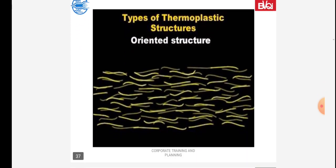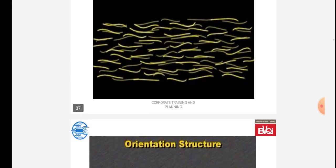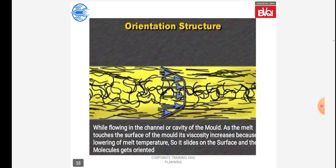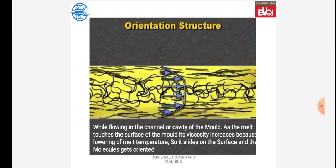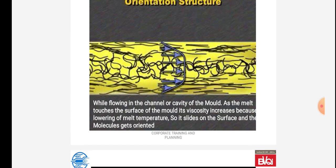Types of thermoplastic structures — oriented structure. While flowing in the channel or cavity of the mold, as the melt touches the surface of the mold, its viscosity increases because of lowering of melt temperature. So it slides on the surface and the molecules get oriented.